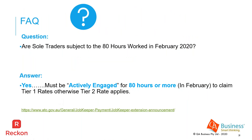Eligible business participants continue — one individual per entity. The business decides who they nominate. Only one JobKeeper payment is allowed for that individual — you can't double-dip as an employee elsewhere. You must be actively engaged in the business. The tier amounts are now subject to the new 80-hour test. Are sole traders subject to the 80 hours worked in February 2020? Yes — a sole trader must have been actively engaged in the business for 80 hours or more in February to claim the tier one rate of $1,200 for extension 1, or $1,000 for extension 2.